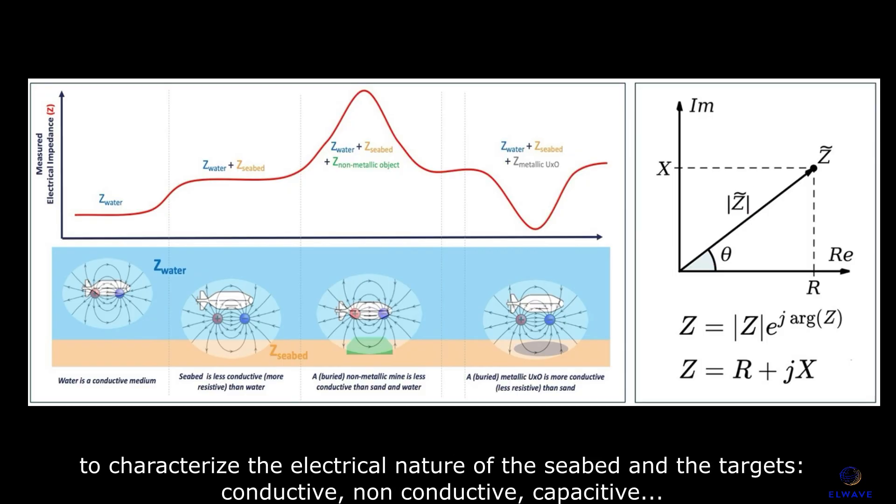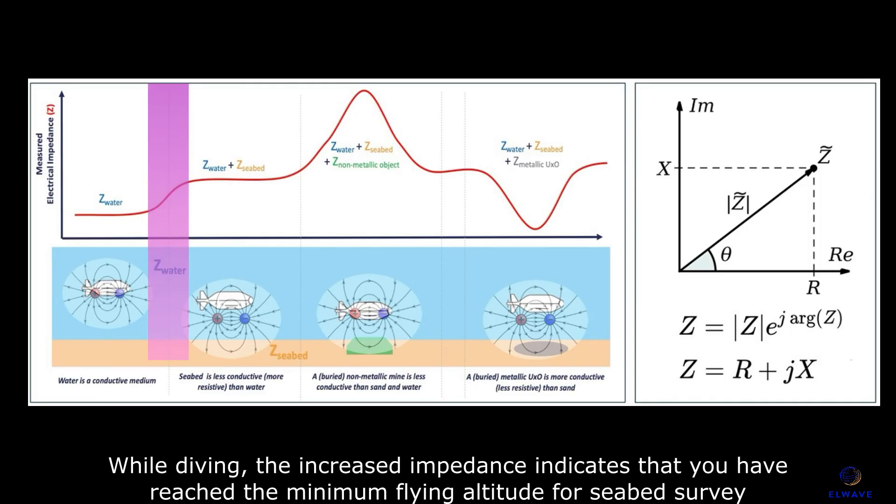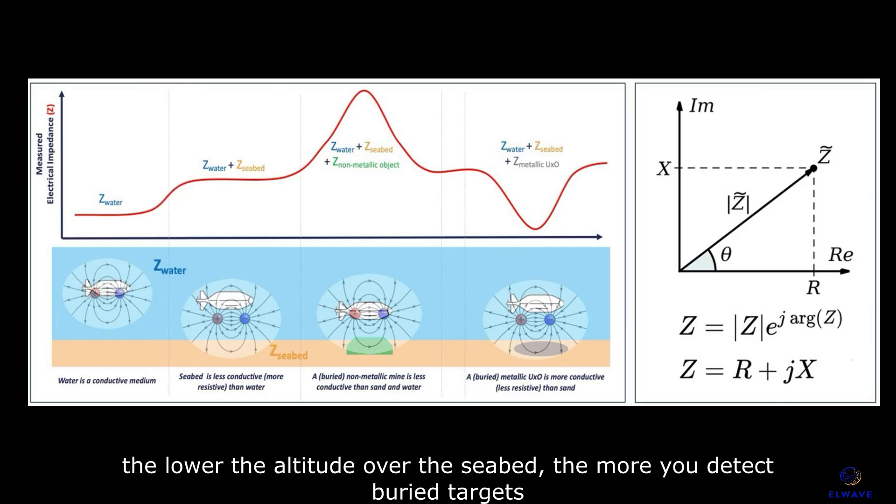To characterize the electrical nature of the seabed and the targets—conductive, non-conductive, capacitive. While diving, the increased impedance indicates that you have reached the minimum flying altitude for seabed survey. The lower the altitude over the seabed, the more you detect buried targets.